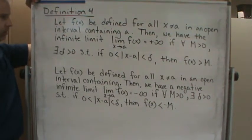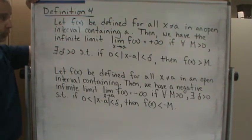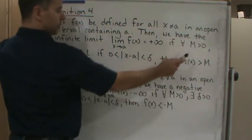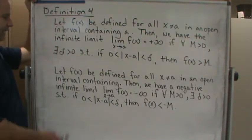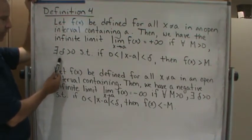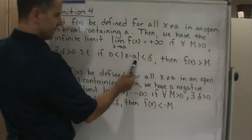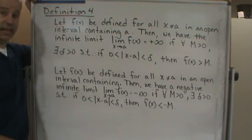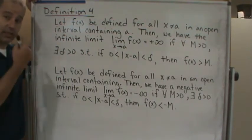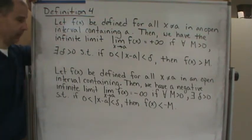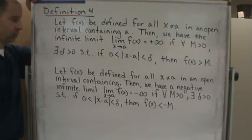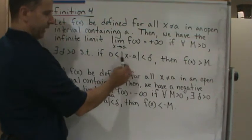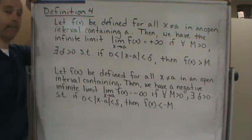It means that no matter what M we choose, no matter what real number we choose, there's going to exist a delta greater than 0 such that if the distance is less than delta, the value of the function is going to be greater than M, which means it's going up without bound. This is saying that as x gets closer and closer to a, the function is increasing without bound.